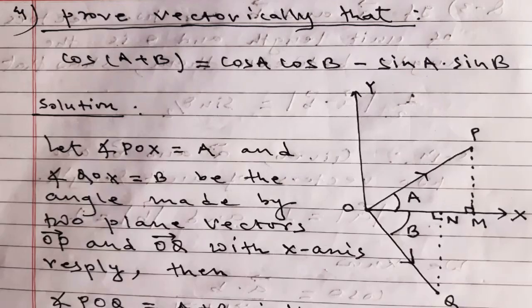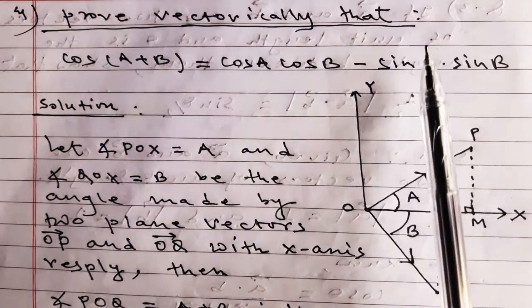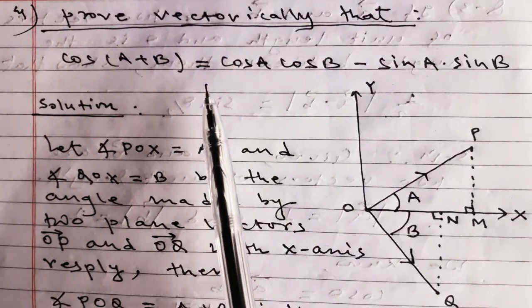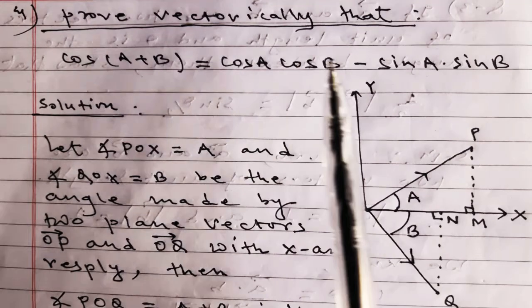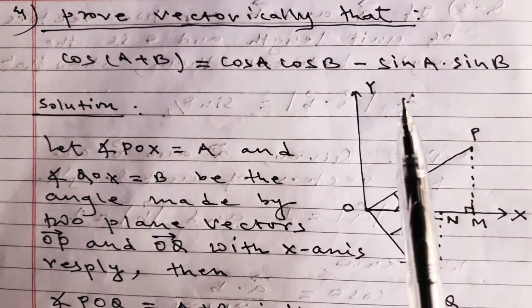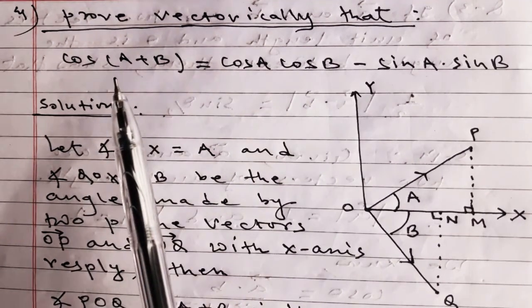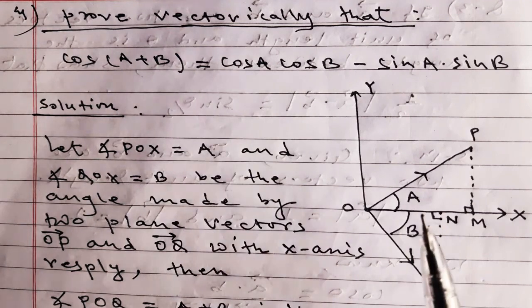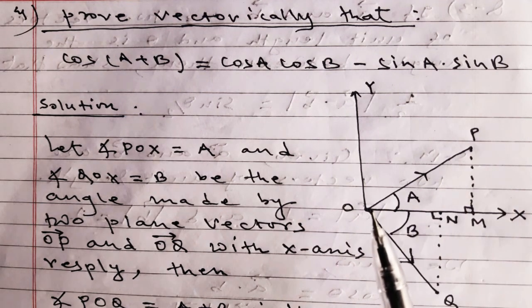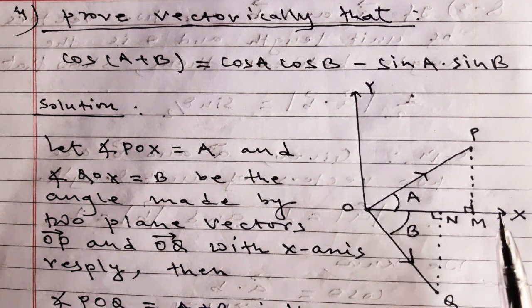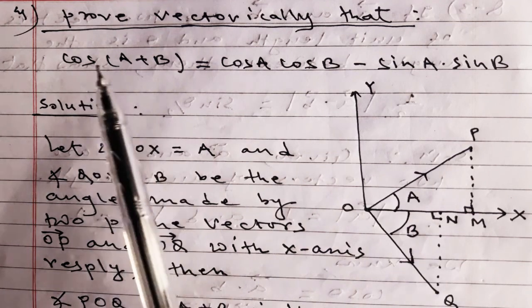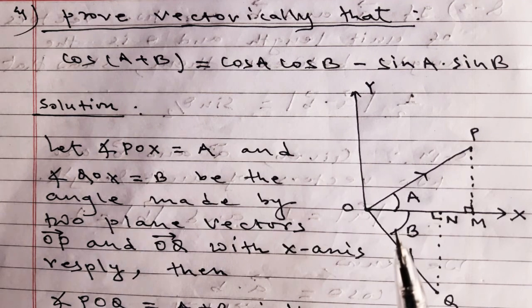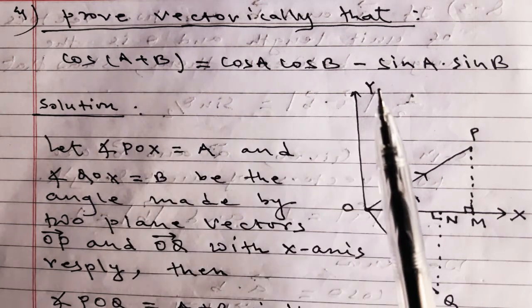Question number four: prove vectorically that cos(A+B) = cosA·cosB - sinA·sinB. This is one of the most probable questions, mainly asked in long questions. By the vector method, let vector OP and vector OQ be any two vectors. Suppose vector OP makes angle A and vector OQ makes angle B with the x-axis. Then the angle between the two vectors equals A+B.